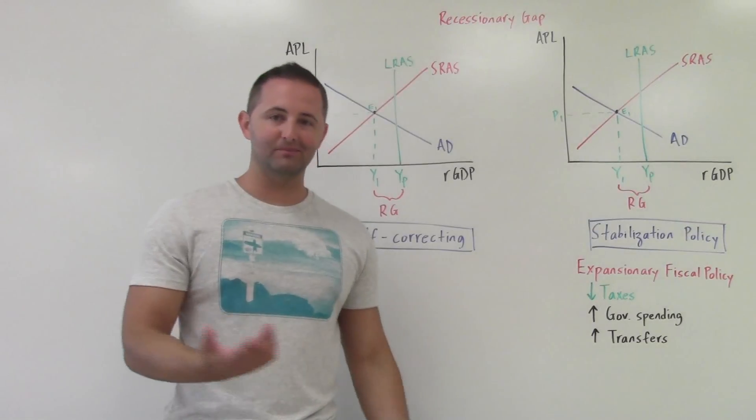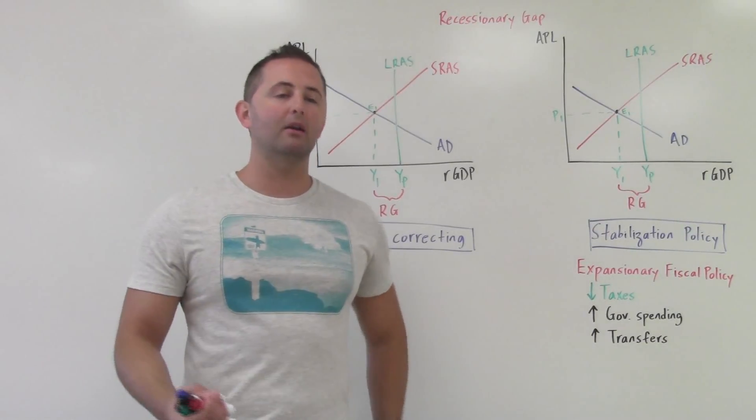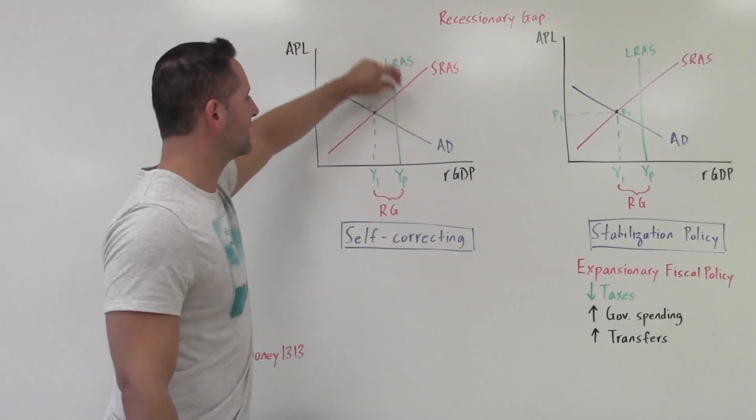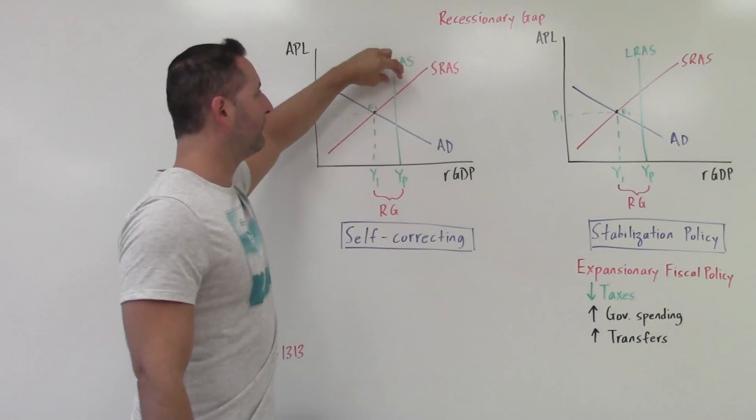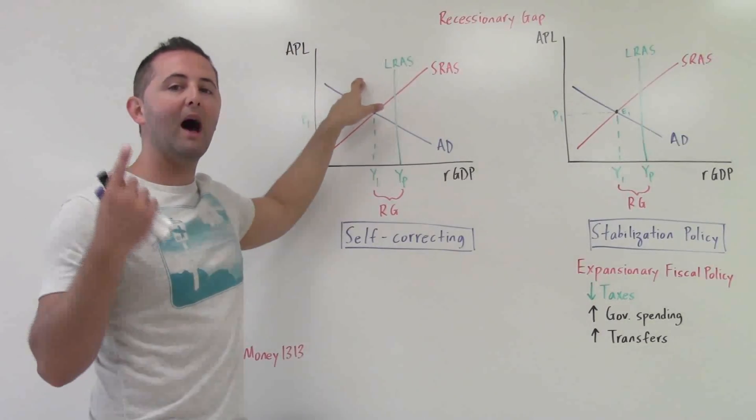Now, this isn't good. As we understand that word recession, it means we have high unemployment. Remember, the LRAS curve is where we are at full employment, where there's no cyclical unemployment. If we're in a recession, that means we have higher unemployment.